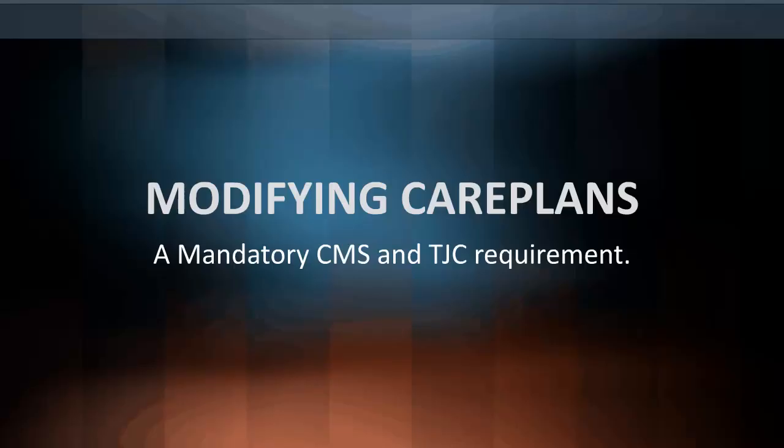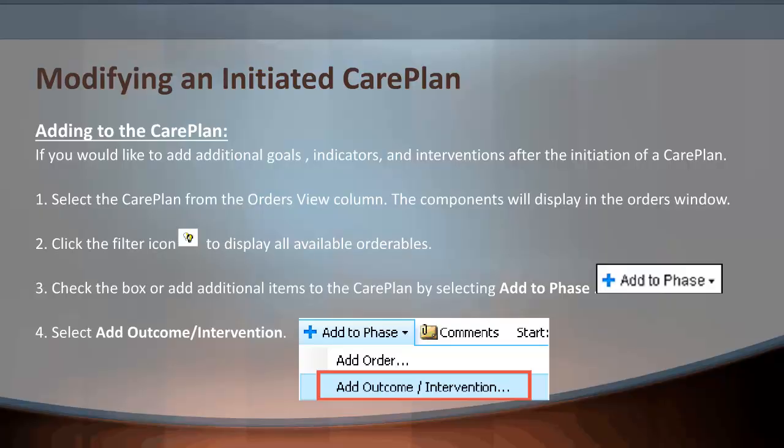Let's move on to how to modify care plans, which are CMS and TJC requirements, and we must see individualism to meet our patient's needs. This prevents the hospital from using generic care plans on every patient. If you would like to add additional goals, indicators, and interventions after the initiation of the care plan, follow these steps.